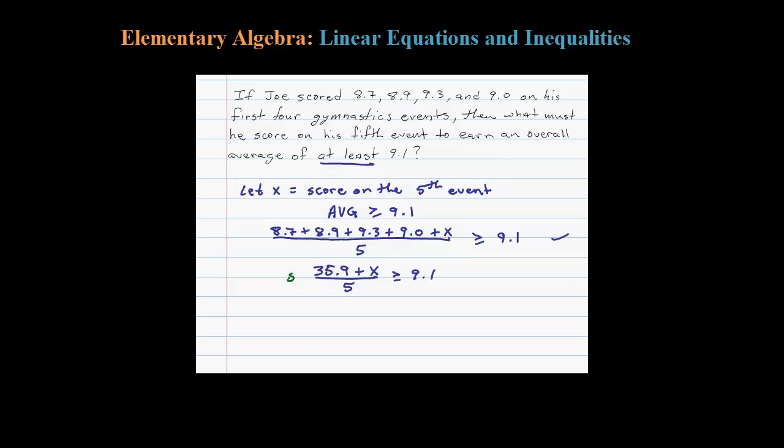So one way to do that is to multiply both sides by 5. On the left side, these fives will certainly cancel, so that just leaves me the numerator: 35.9 plus X should be